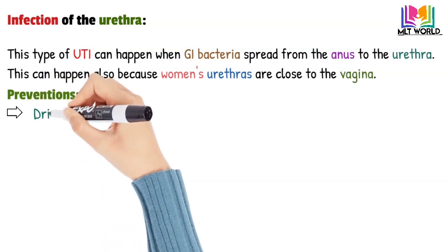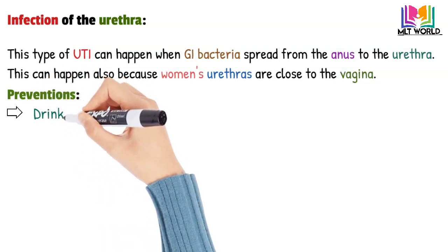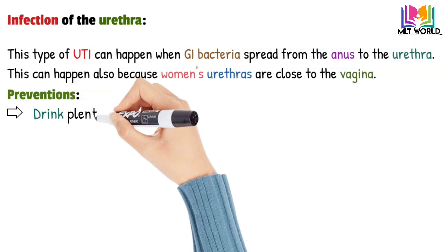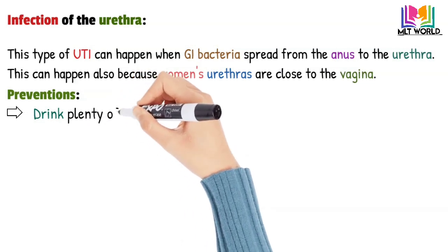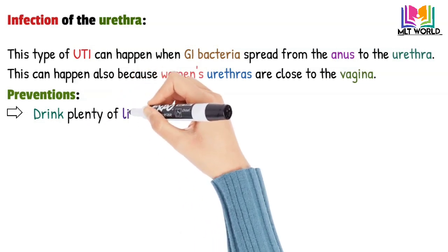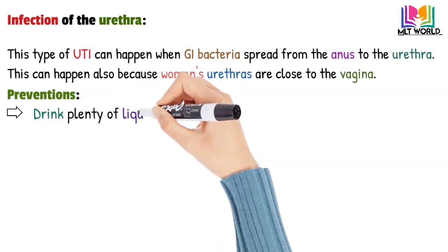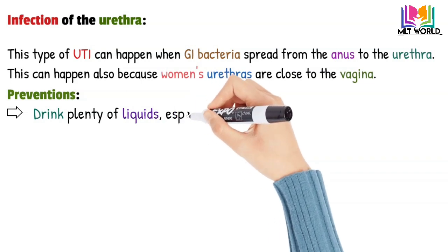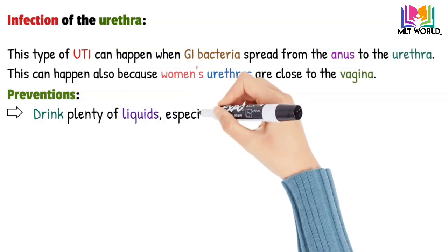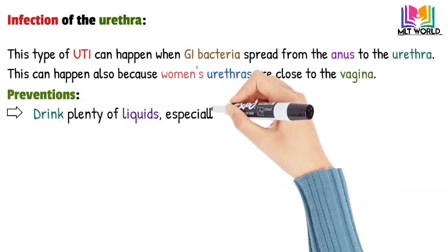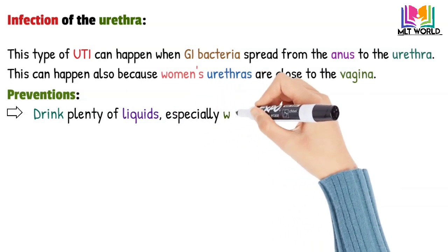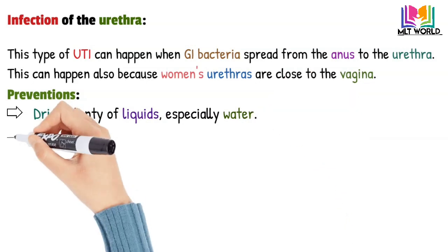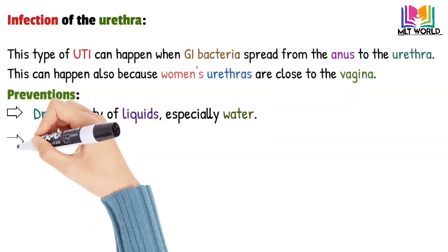Now we will see the preventions — how we can prevent UTI. First, drink plenty of liquid, especially water, because drinking water helps dilute the urine and leads to urinating more often, allowing bacteria to be flushed from the urinary tract.